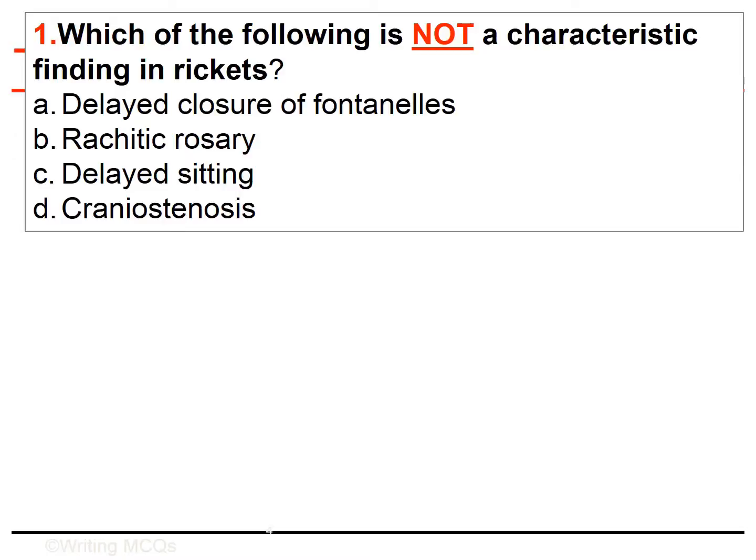Question number one is not good: 'Which of the following is NOT a characteristic finding in rickets?' Why is it not good? While listing three characteristic clinical findings of rickets, the student needs only to recall them. This is followed by the correct answer — cranial stenosis — which is obviously not related to rickets.